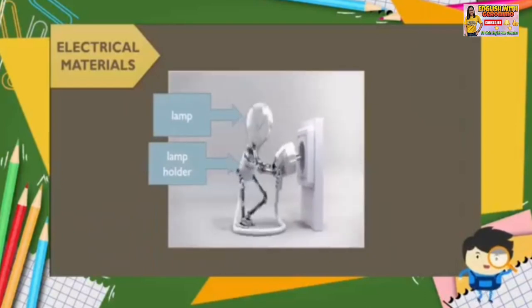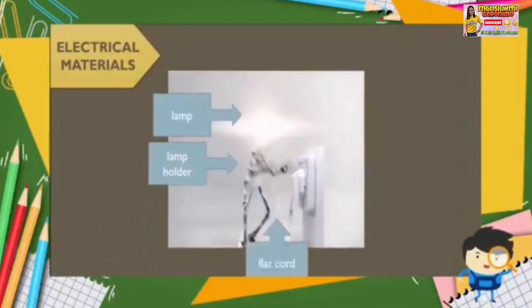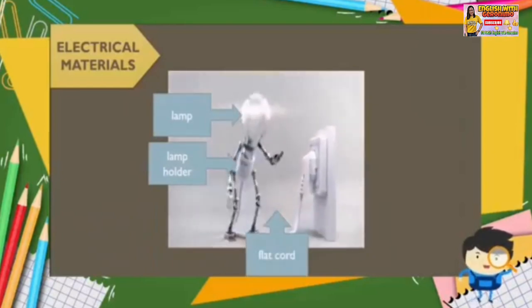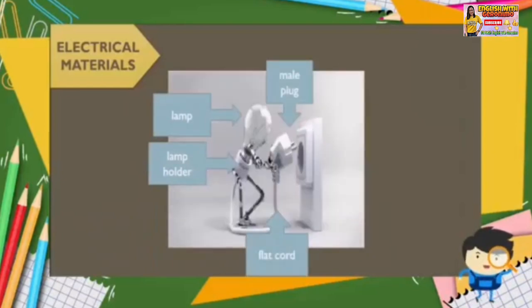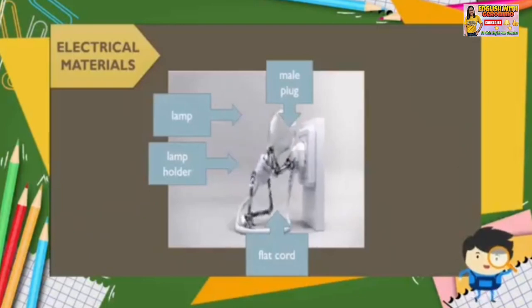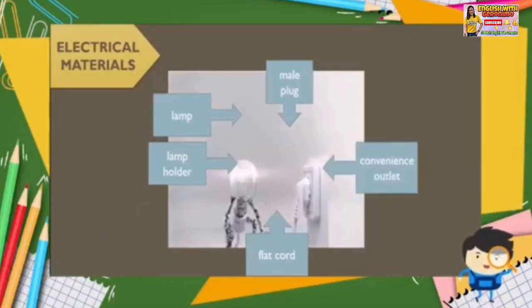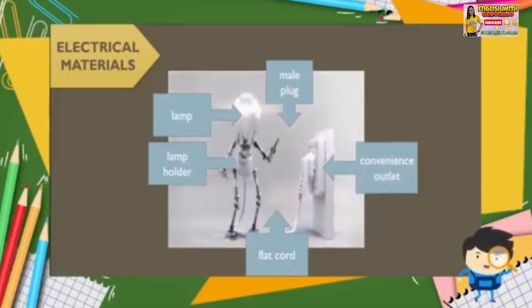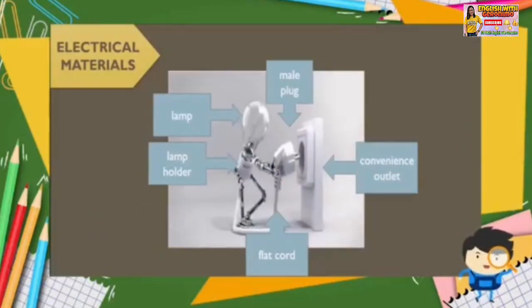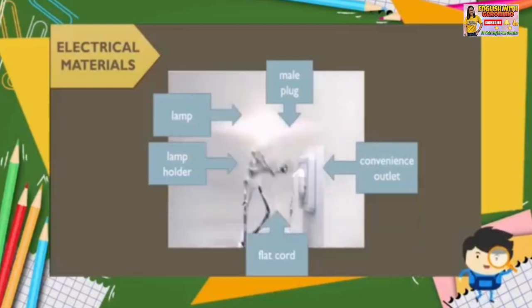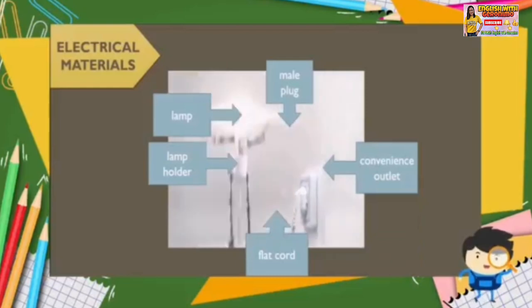Second is lamp holder. Third is flat cord. Fourth is nail plug. And the last one is convenience outlet. Now let's talk about their use and function.